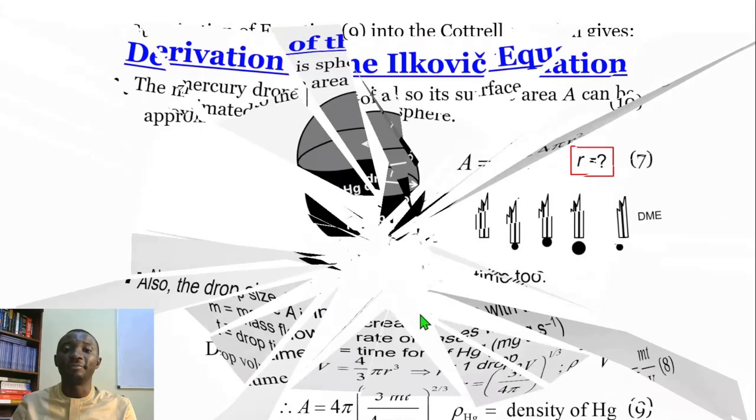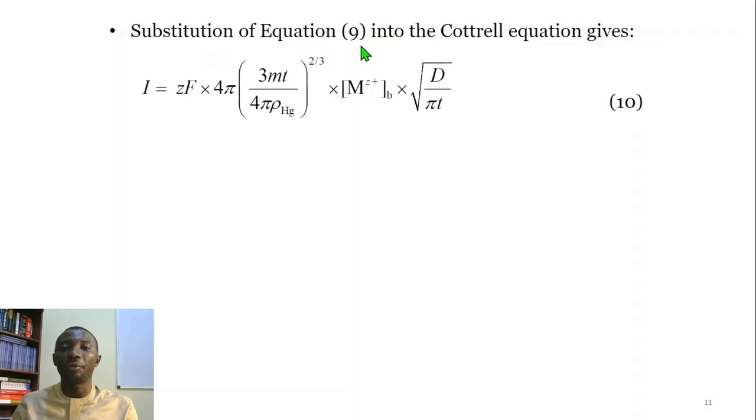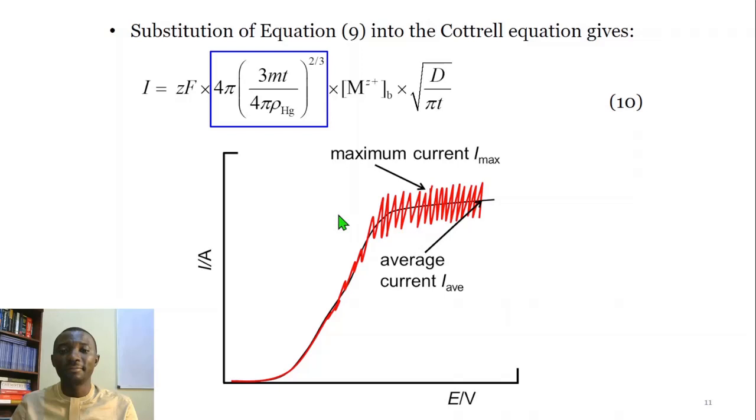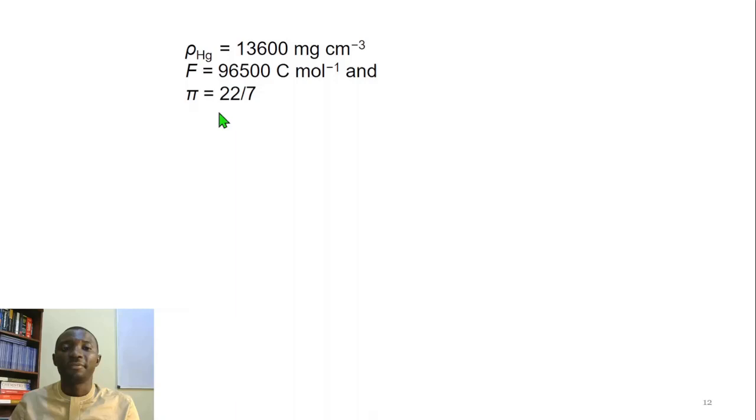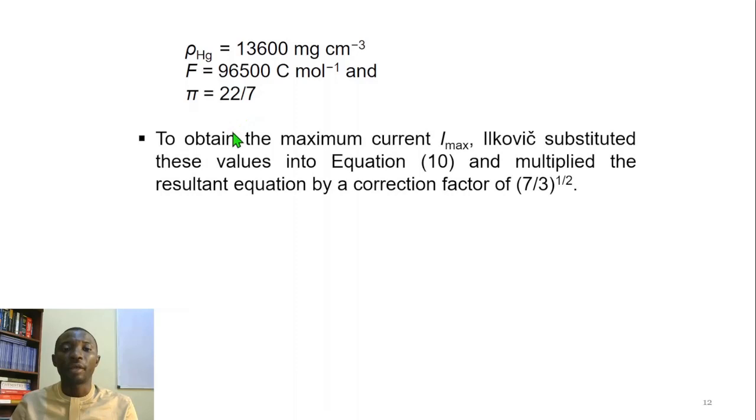When the area is substituted into the Cottrell equation, we obtain equation 10. This is the area. Every other parameter remains the same with respect to the Cottrell equation. However, there are two important forms of diffusion current in polarography. We've got the maximum diffusion current and the average current. The average current lies in between this wavy polarogram, while the maximum current lies at the peak of the polarogram. The density of mercury is 13,600 milligrams per cm³. The Faraday's constant is 96,500 coulombs per mole. And π is 22/7.